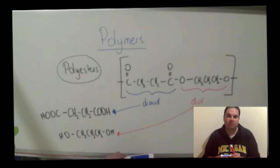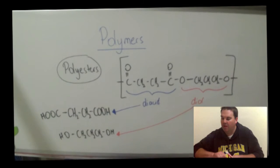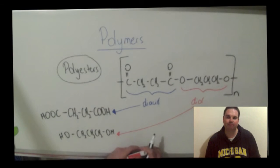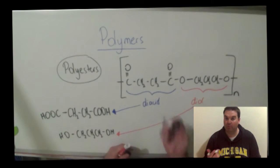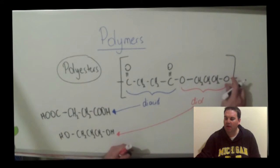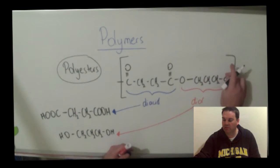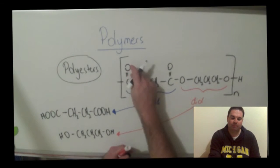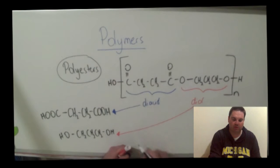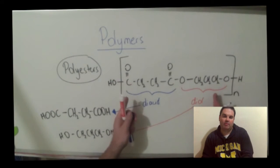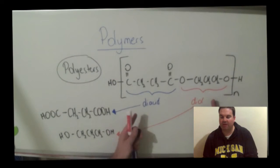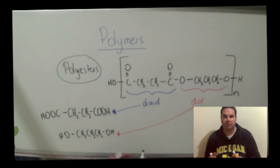If you want to show it's a repeating unit and a long polymer chain, put a little 'n' subscript at the bottom. You can also finish it off: the end of the alcohol — single bond oxygen — finishes with an H; the end of the carboxylic acid — double bond oxygen — finishes with no H. So in the middle is our polyester from our diacid and diol, with square brackets showing the repeating unit.